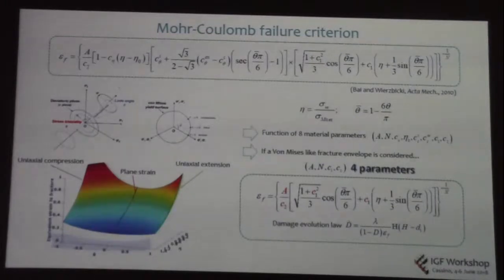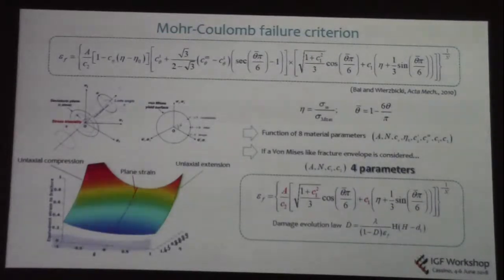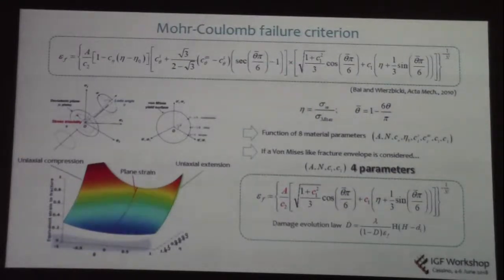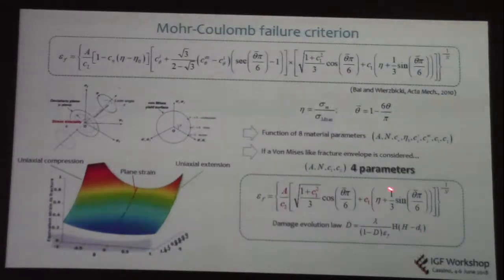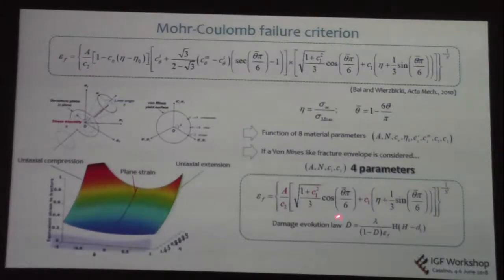We adopted the second criterion I showed yesterday — the more extended one — which is a function of the stress triaxiality and load angle. We assume some simplification: we do not take into account the effect of pressure and load angle on the plasticity, so we can reduce from 8 to 4 material parameters. This is the expected damage evolution law shown yesterday for the monotonic tensile test.